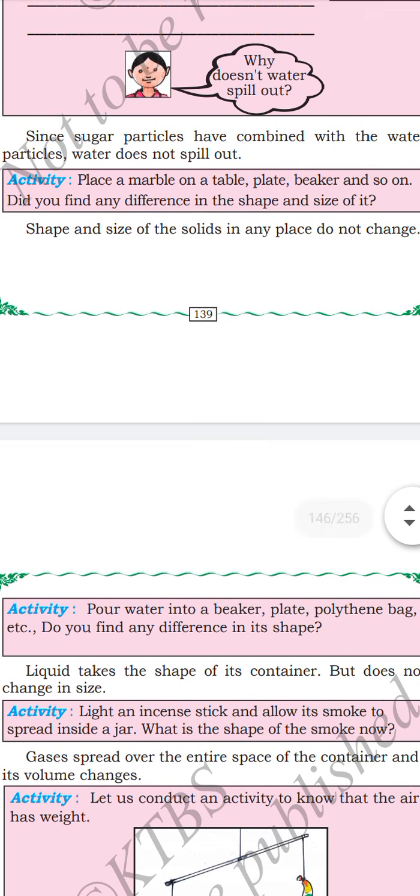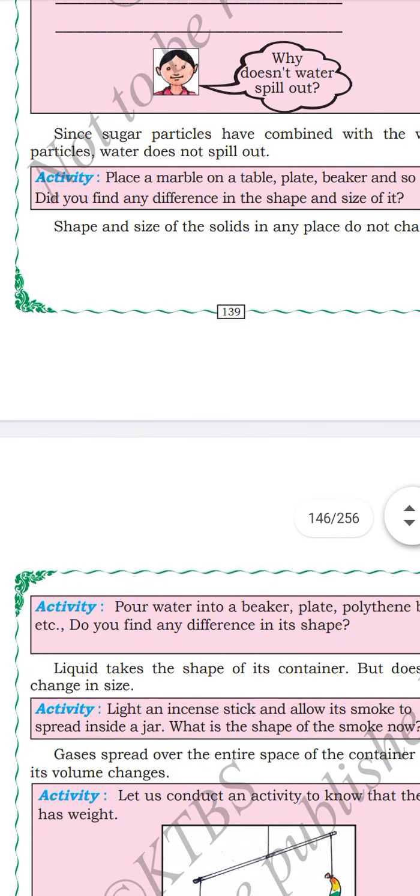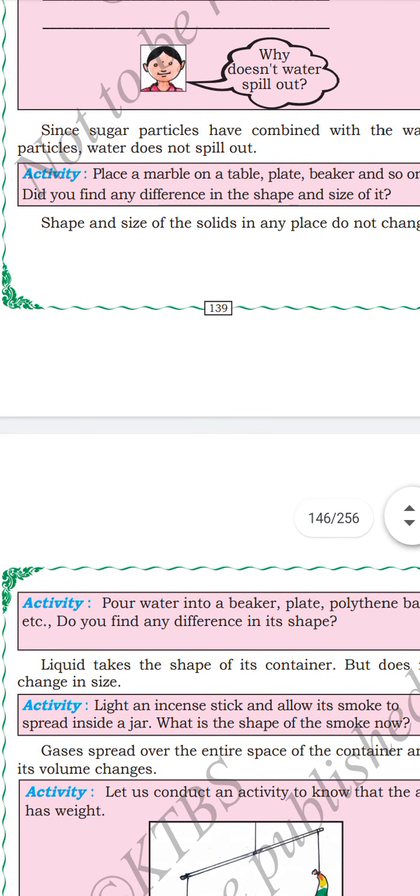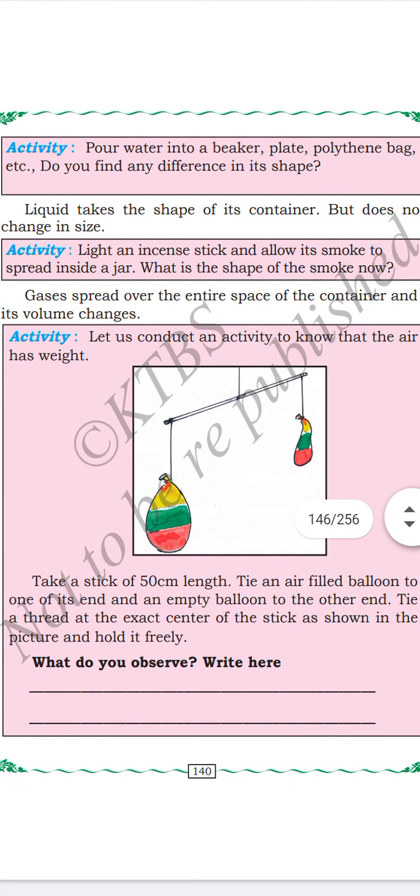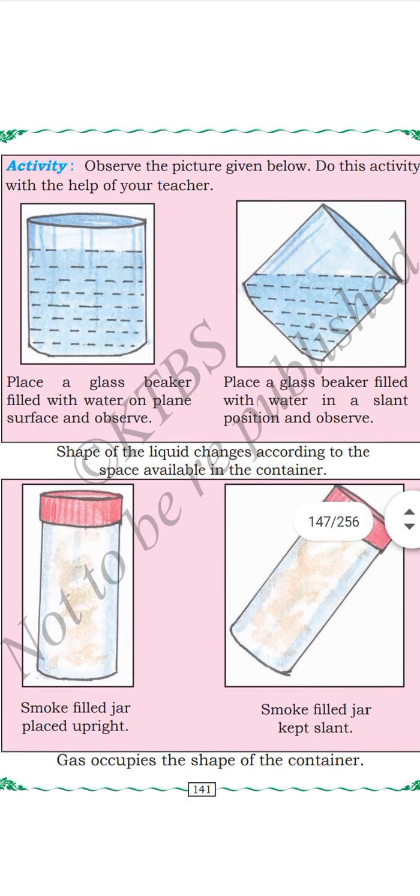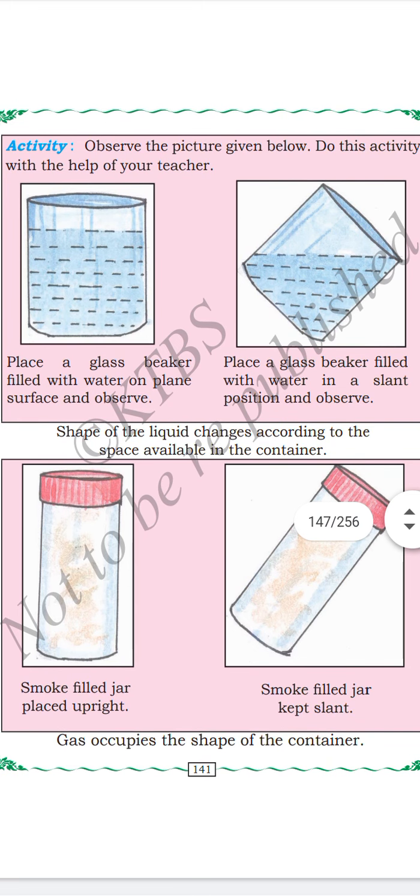Liquid takes the shape of the container but does not change in size. Gases spread over the entire space of the container and its volume changes. The shape of the liquid changes according to the container space. Gas occupies the shape of the container.